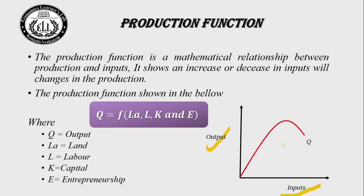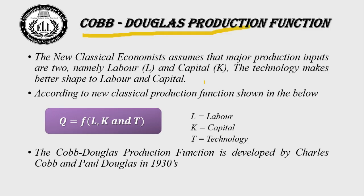The new classical economists assume only two major production inputs: labor and capital. Technology shapes labor and capital. They merge the traditional four factors — land, labor, capital, and entrepreneurship — into just two: entrepreneurship is merged into labor, and land is merged into capital.